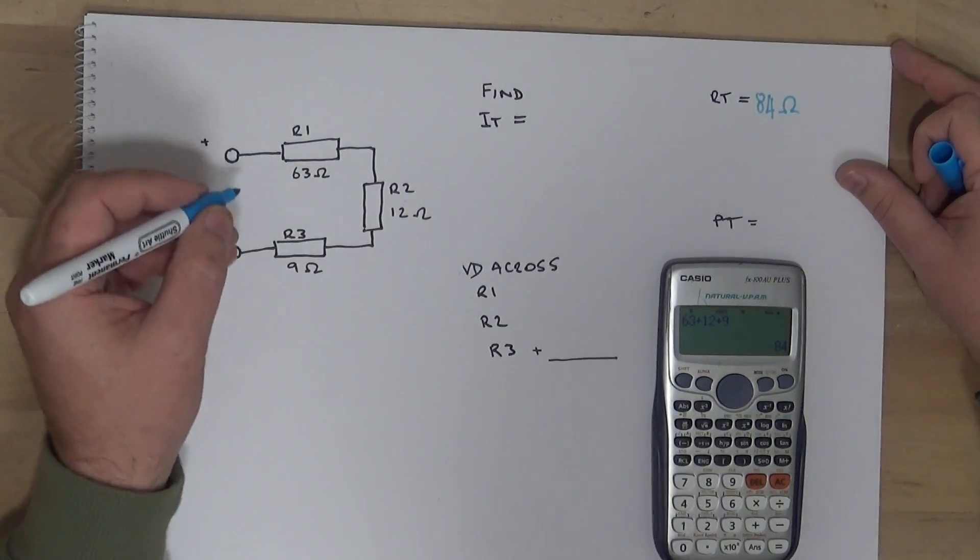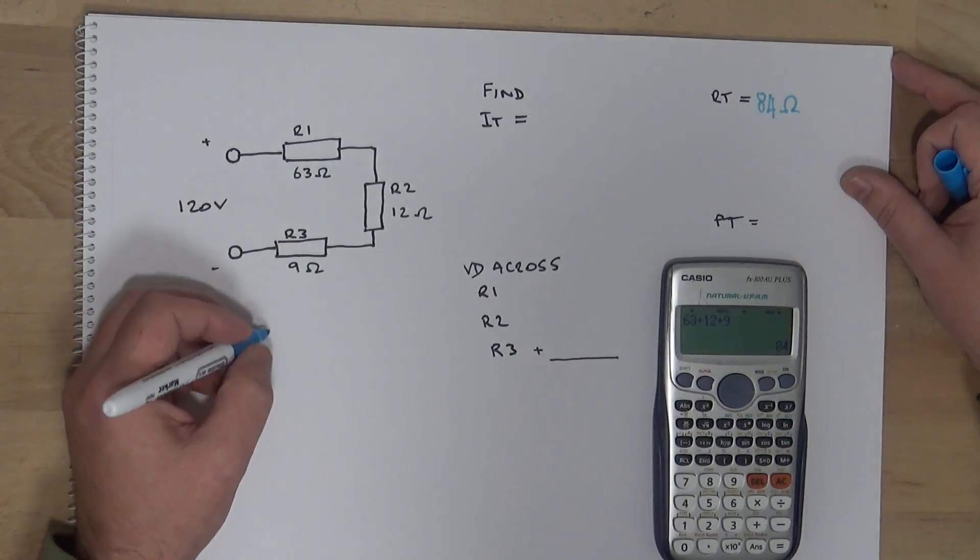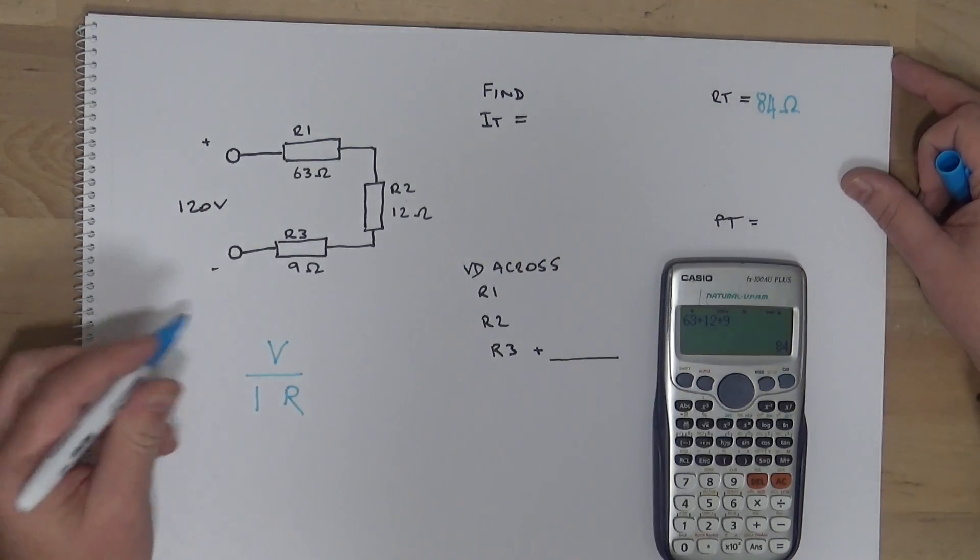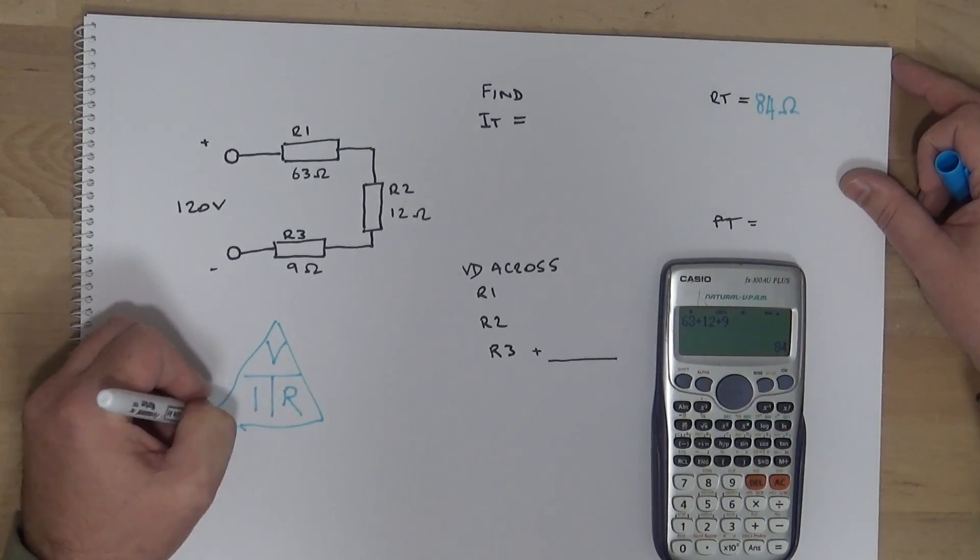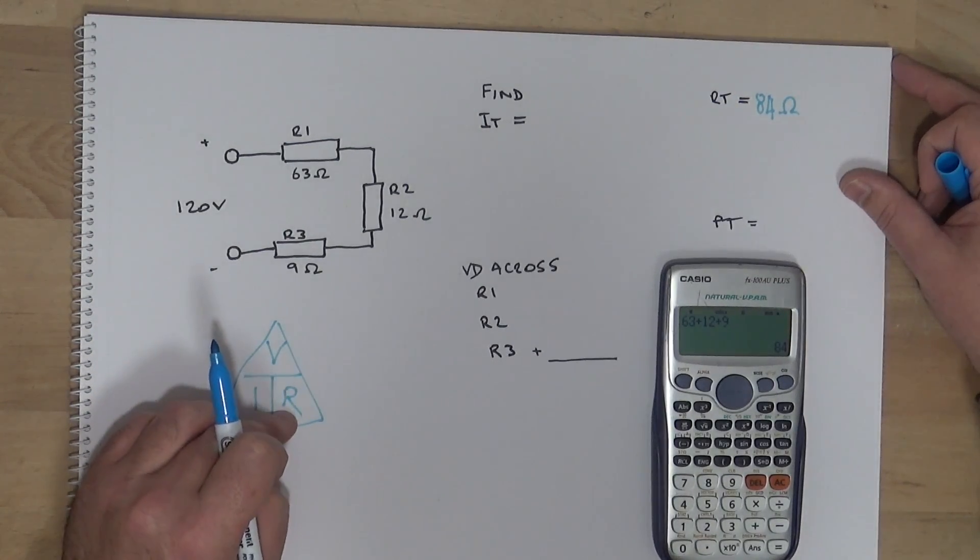Okay, so current total. So if we look at the good old Ohm's law triangle thing, we want the I, it's voltage divided by the resistance.